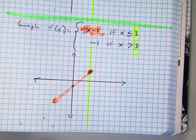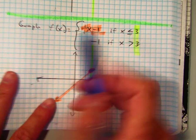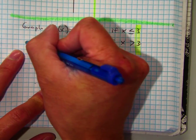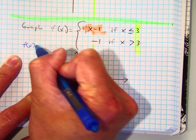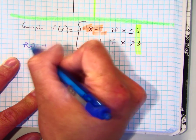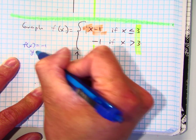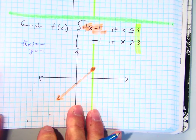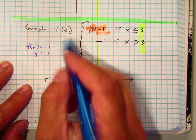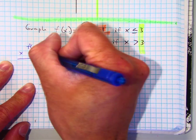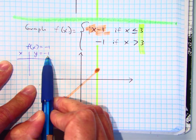Now, here this one says f of x equals negative 1. And we said that f of x is an easier way of saying y equals negative 1, right? So if I make a table of values, what does it tell you about all the y values?